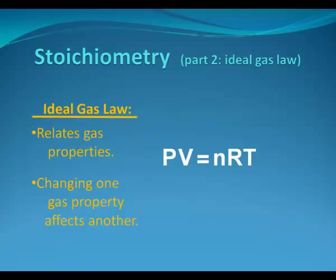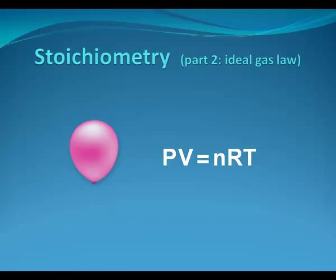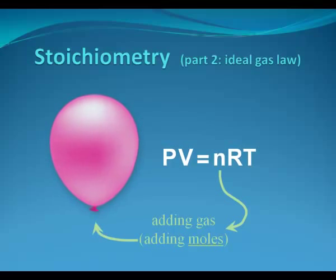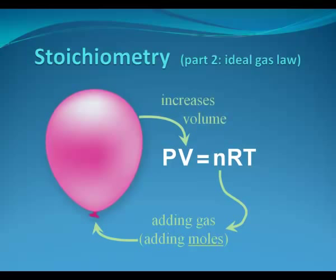Now the ideal gas law has parts of it that are related to each other. Changing the property of one changes the property of another. Let me give you an example. Let's start with a balloon. If we take this balloon and add gas to the balloon, in other words we're adding moles or n, then the volume of the balloon increases. You blow air into a balloon, it increases its volume. So changing one thing changes another thing. All the properties are related to each other. Of course in this case pressure and temperature are kept constant.